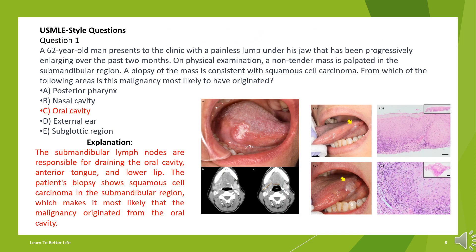The answer is C. Oral cavity. The submandibular lymph nodes are responsible for draining the oral cavity, anterior tongue, and lower lip. The patient's biopsy shows squamous cell carcinoma in the submandibular region, which makes it most likely that the malignancy originated from the oral cavity.